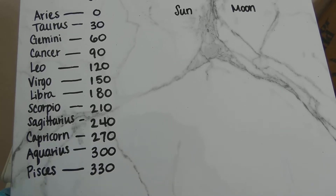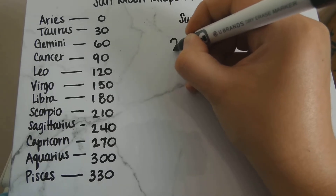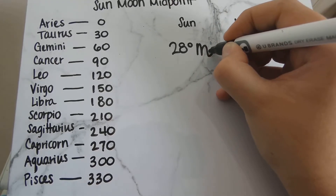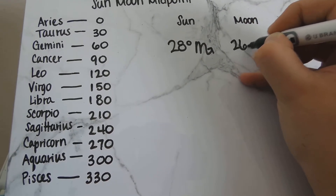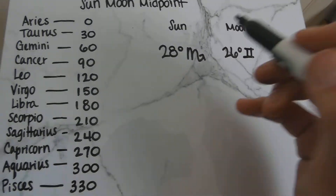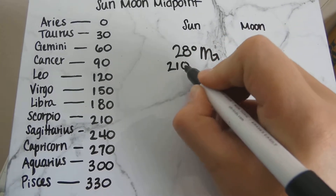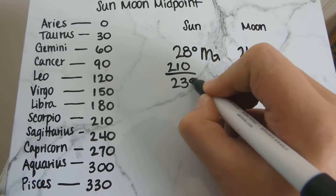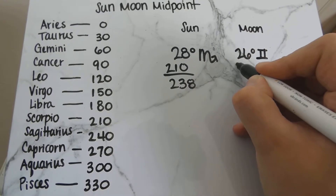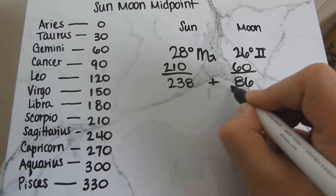We are going to continue on. For example, I'm going to be using 28 degrees Scorpio and also 26 degrees Gemini for the moon. So in Scorpio you see 210, so we're going to add 210 to the 28 and get 238. Then Gemini is 60, so we're going to add 60 to 26 and get 86, and we're going to add these two numbers together.